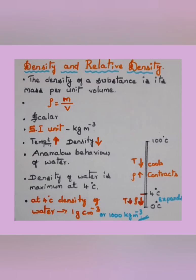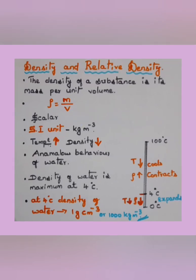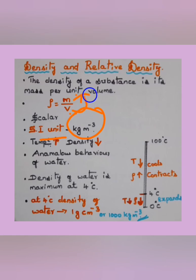Density of a substance is its mass per unit volume. It is represented by the letter rho: ρ = mass / volume. Density is a scalar quantity, and the SI unit of density is kg per meter cube (kg/m³).